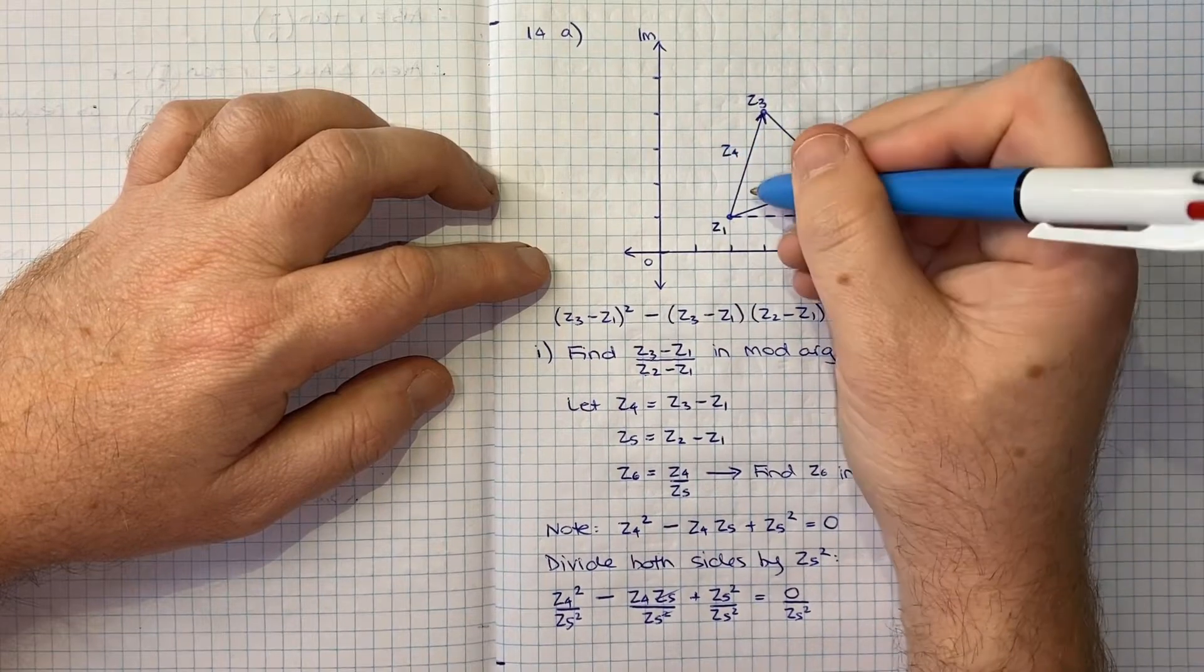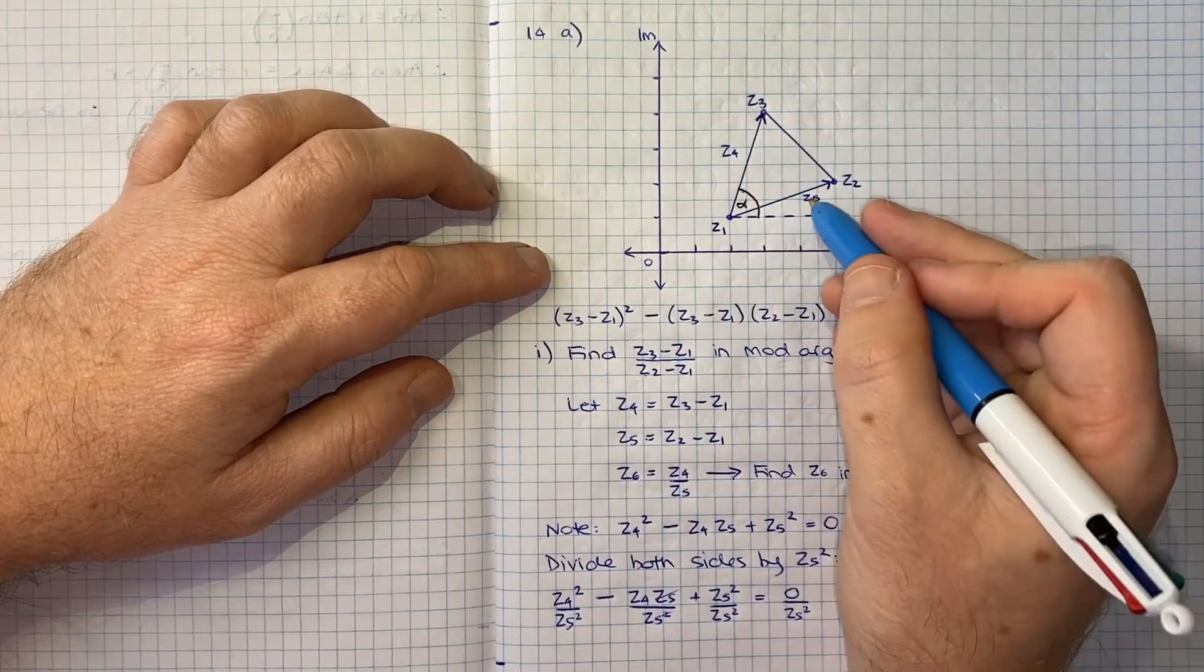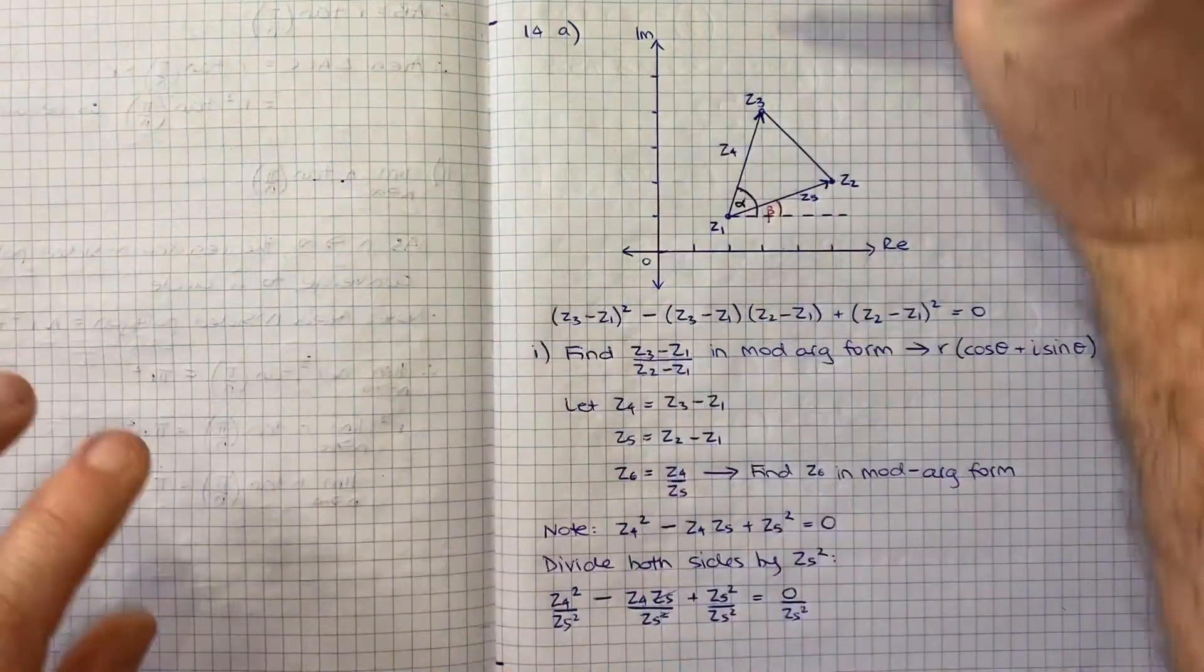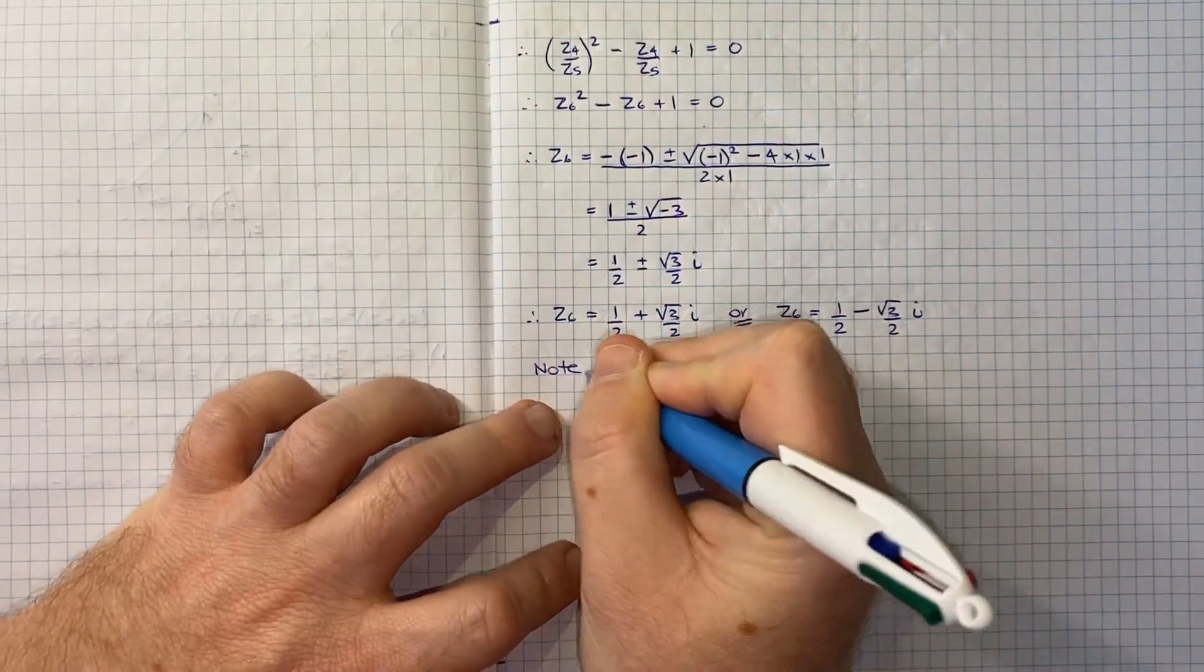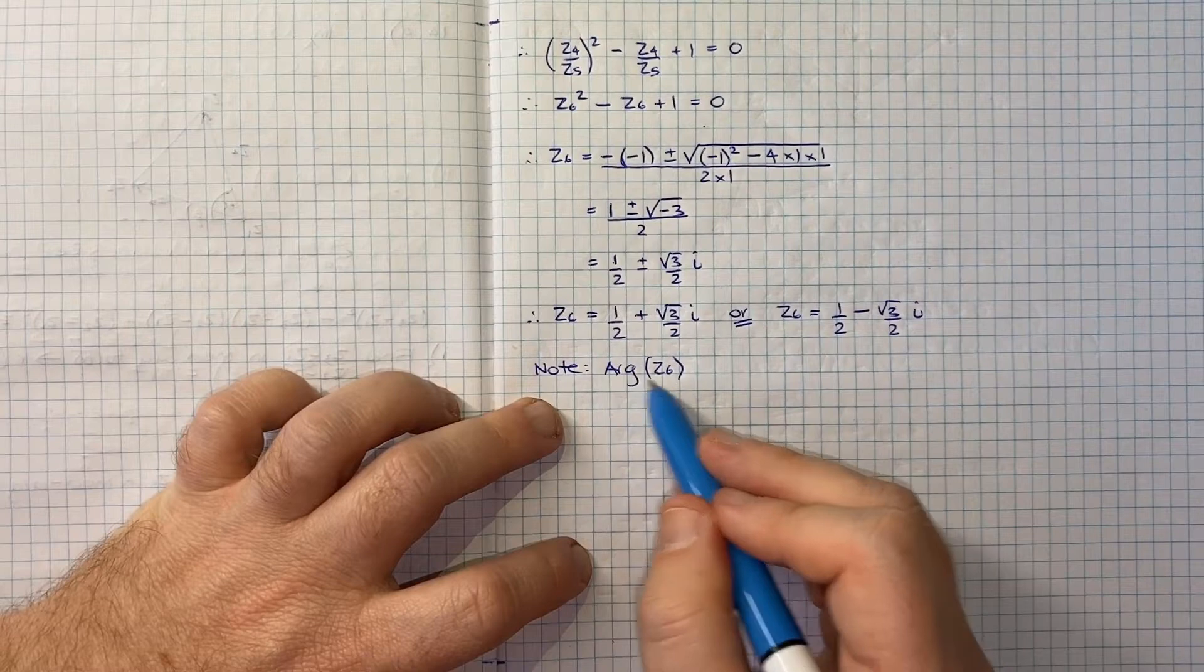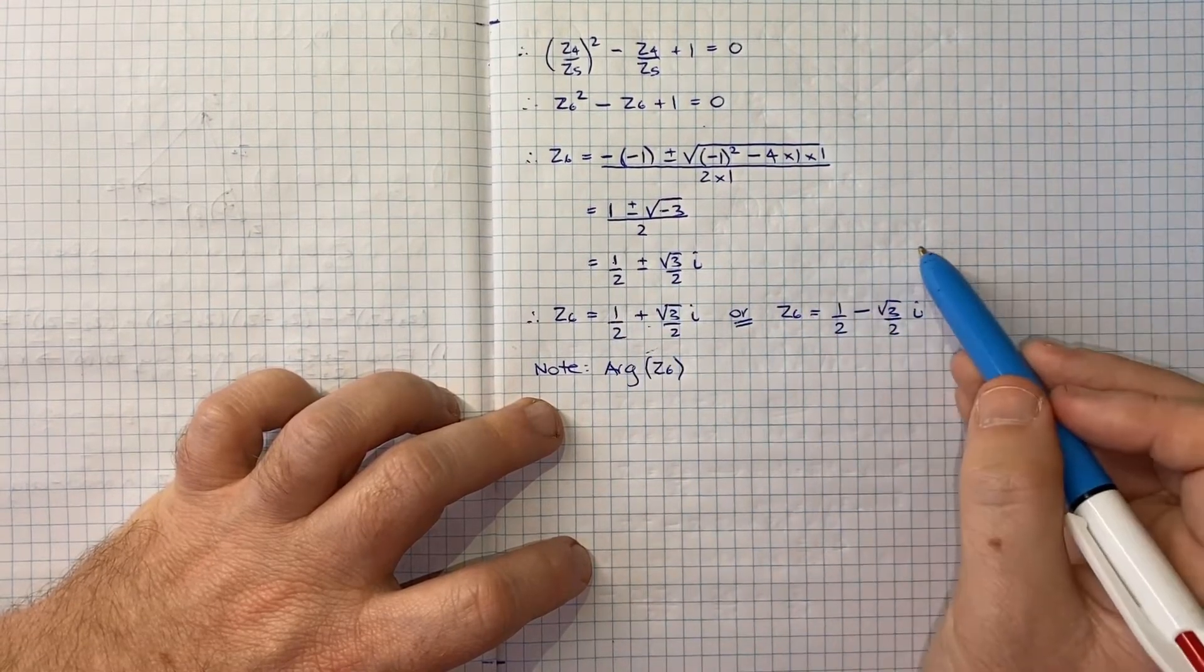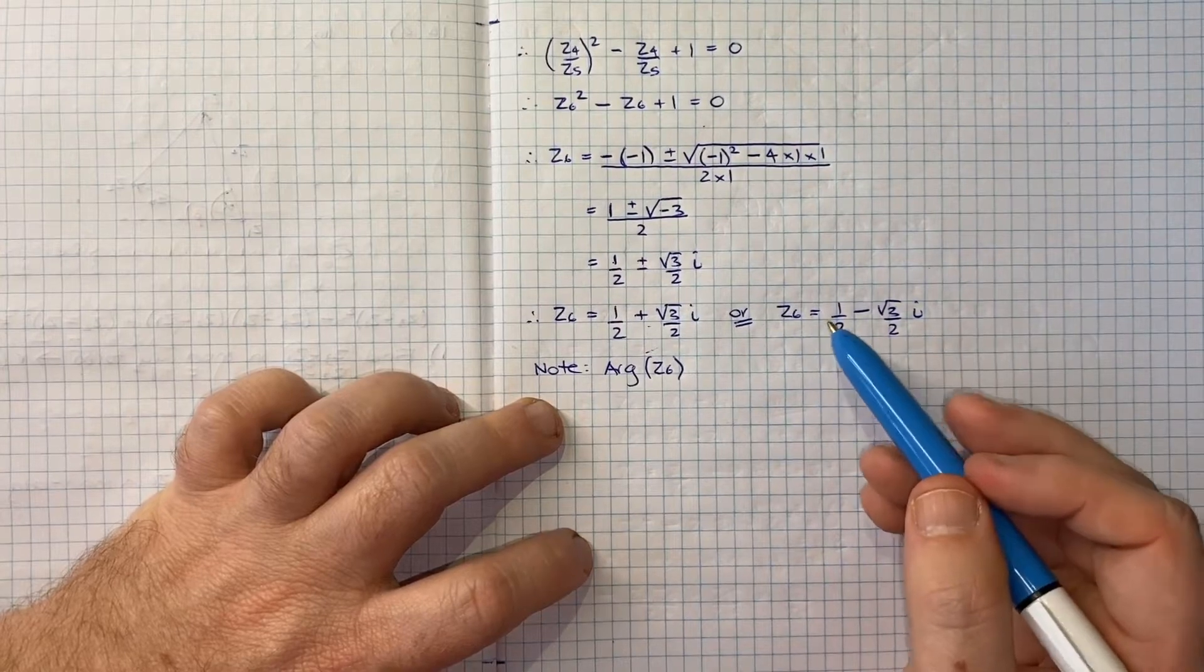In terms of the argument of Z4, that's going to be this angle here, which I'll call alpha. And the argument of Z5 would be this angle here, which I'll call beta. The reason that's going to help us is if we make a note about what the argument of Z6 is. If we think about the argument of Z6, that's going to help us work out whether this is our solution or this, because it will tell us are we essentially in the first quadrant, moving across a half and up root three over two, or in the fourth quadrant, moving across a half and down root three over two.